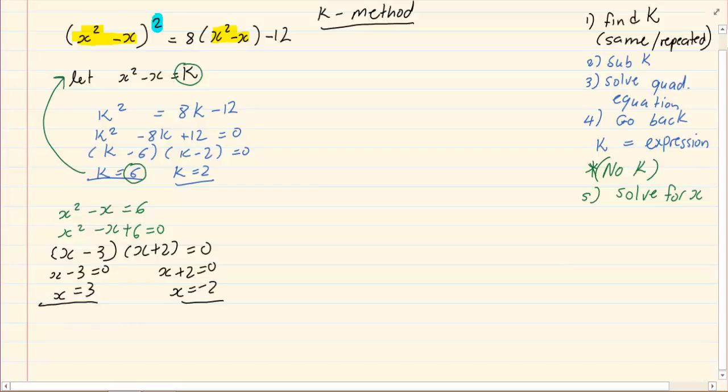But there are two values for K. We have another one where K = 2, which means you have to do the same thing again. Wherever K is, I am going to substitute it. So you are repeating the process.